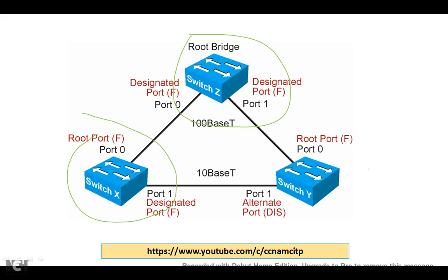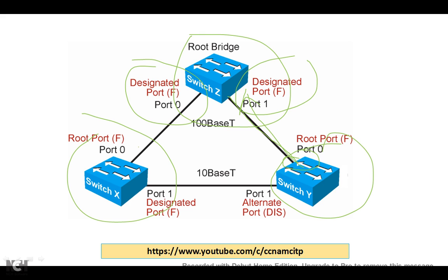We have one switch taken as the root bridge switch. If we talk about this switch, we have two ports — a designated port. For the next switch, this port is taken as a root port because from here the traffic reaches the root bridge. Similarly, for the other switch this is the root port, because it has the shortest cost.